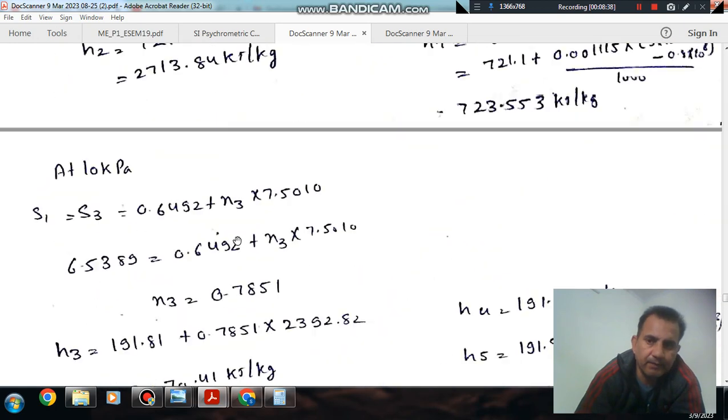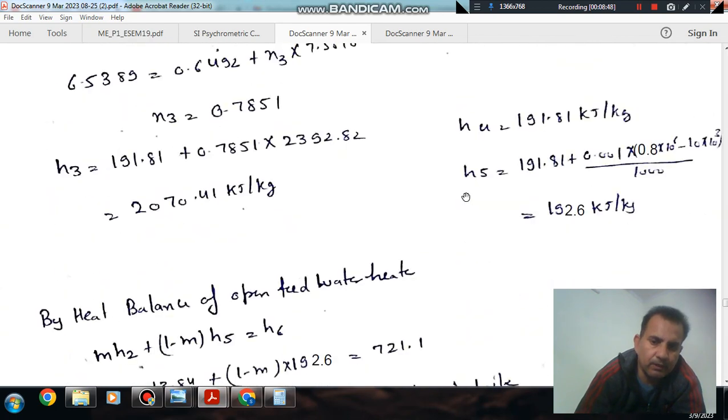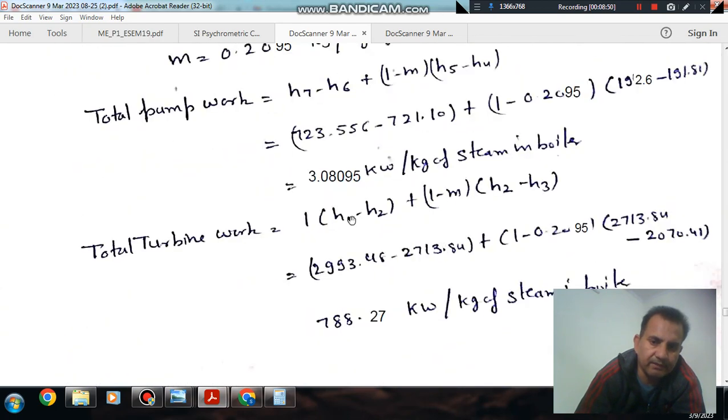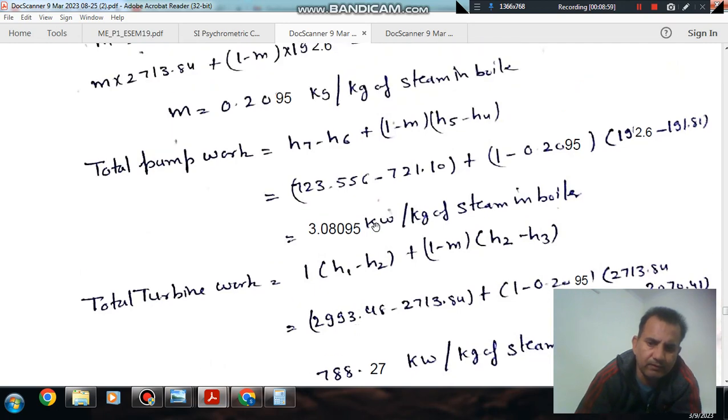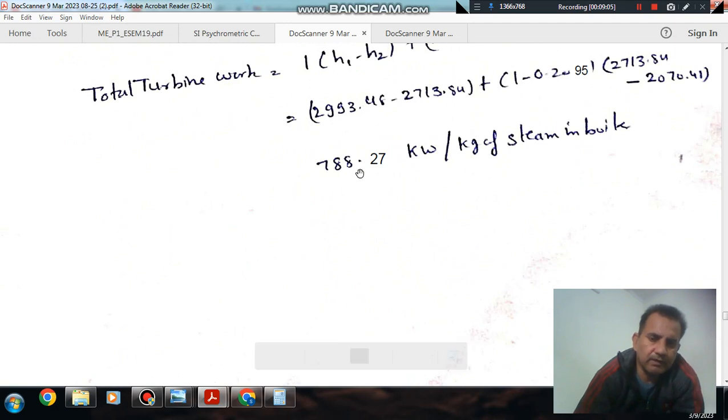And similarly, turbine work is also the sum of two parts: H1 minus H2 and H2 minus H3. The first is for 1 kg, and the second is for (1 - M) kg. So it will be (H1 - H2) + (1 - M)·(H2 - H3). We have all the values now. You can see and verify the calculations. So turbine work comes to 748.27 kW per kilogram. You can check it. Okay. Thank you.